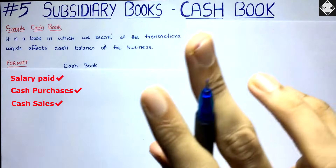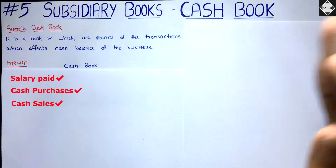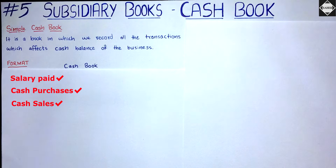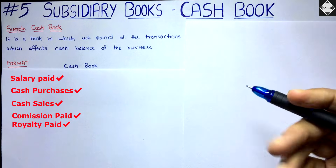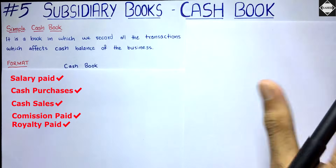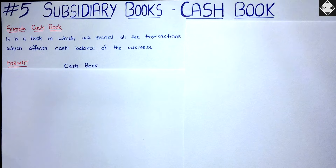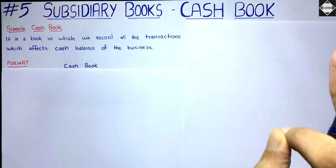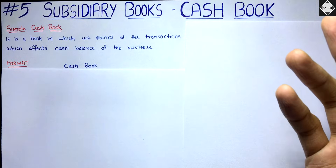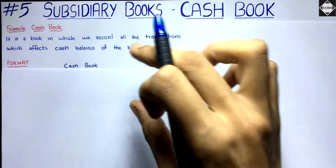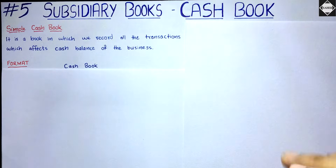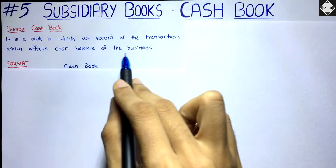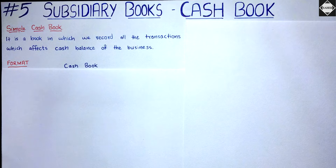In the purchase book we only record credit purchases, and in the sales book we only record credit sales. If cash is involved, those transactions go into the cashbook. Another example: if you have paid commission or royalty to someone in cash, it has to be recorded in the cashbook. There will be no journal entry — the recording happens directly in the cashbook, just like in the sales book and purchases book. Any transaction which touches the cash balance will be recorded in the cashbook.